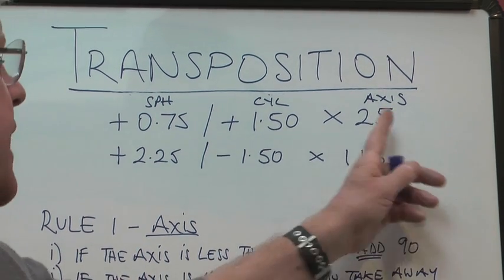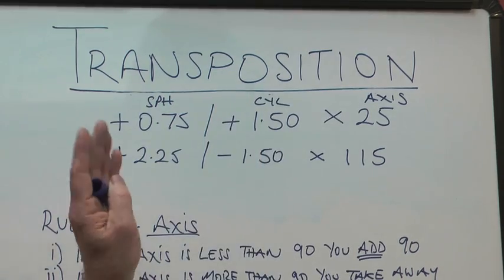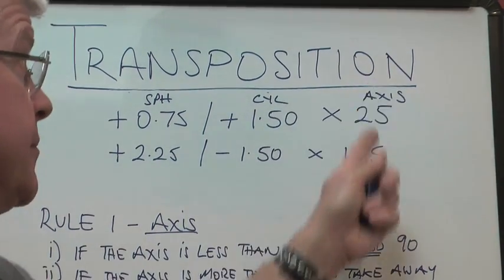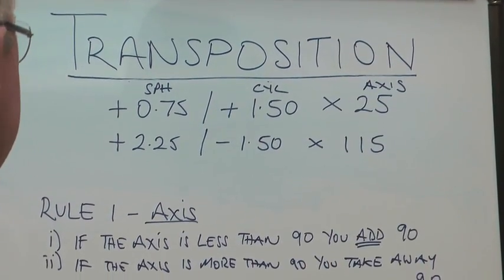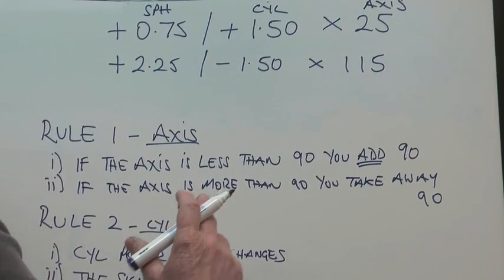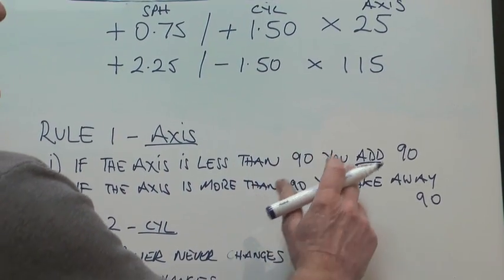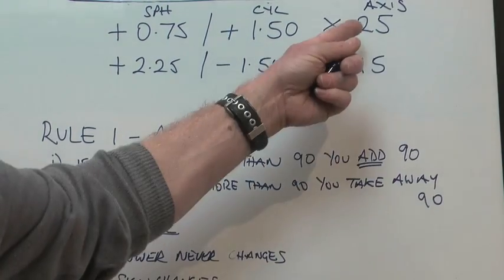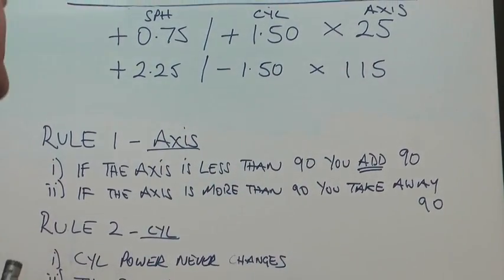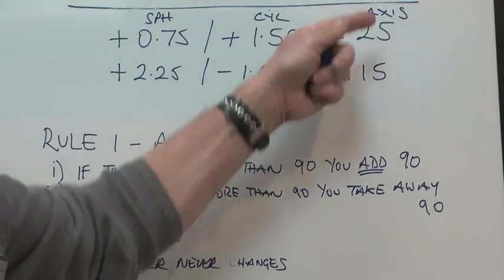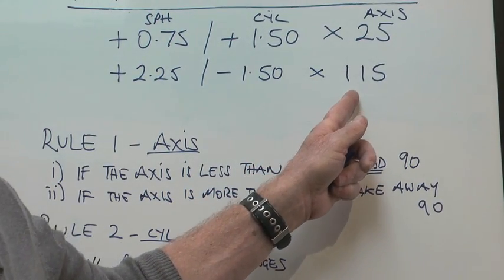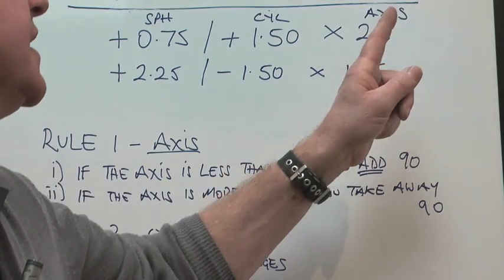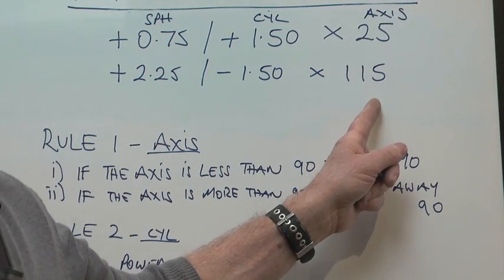Rule one, we're going to work from the axis going backwards. So we're going to look at the component which is the axis here. If the axis is less than 90, you add 90 to it. So in this case, the axis was 25. When you want to transpose that into its other form, you end up with 115. You add 90 to 25 to get 115.